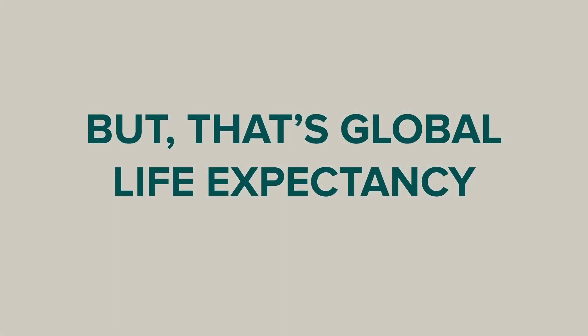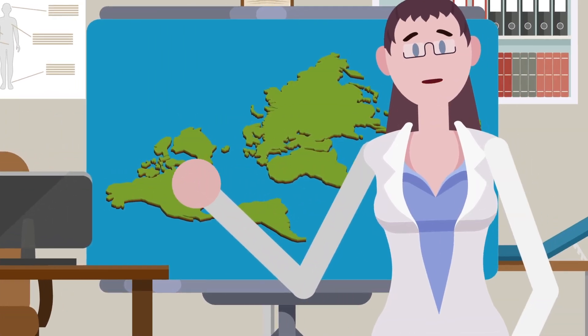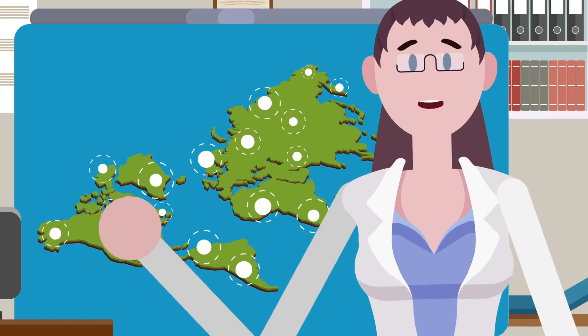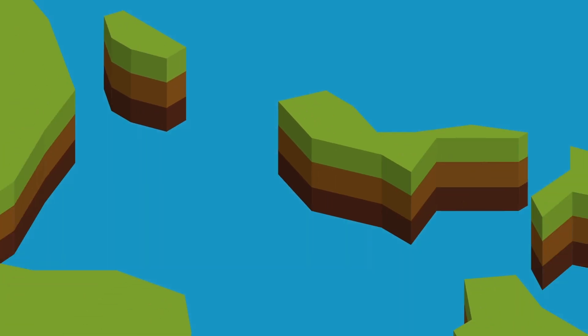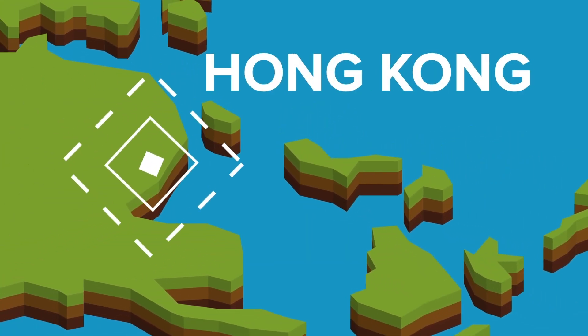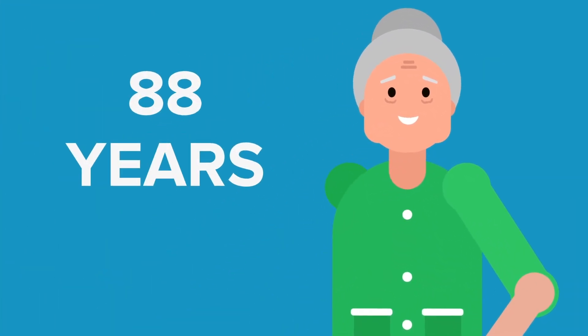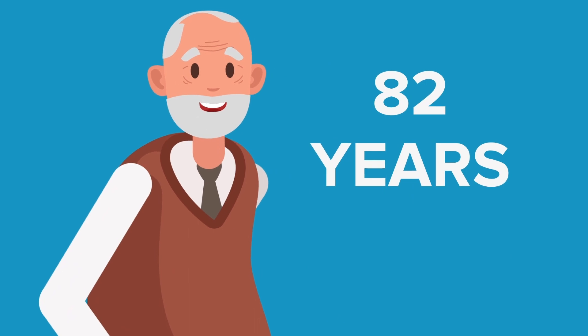But that's global life expectancy. If we take a closer look at different countries individually, we can see that life expectancy varies quite a bit around the world, even today. The region with the best life expectancy today is Hong Kong, where the average woman can expect to live for a whopping 88 years. And men have a life expectancy of 82 years, for an average of 85 years for both sexes.